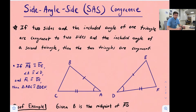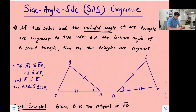Hello everyone. In this video we're going to talk about a congruence theorem for triangles in geometry called the Side Angle Side, or SAS congruence theorem. The SAS theorem says if two sides and the included angle of one triangle are congruent to two sides and the included angle of a second triangle, then the two triangles are congruent. We need two sides that are congruent and the angle that is in between those two sides — that's what the included angle means.